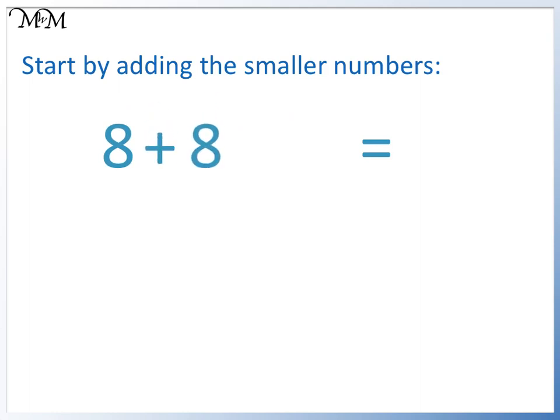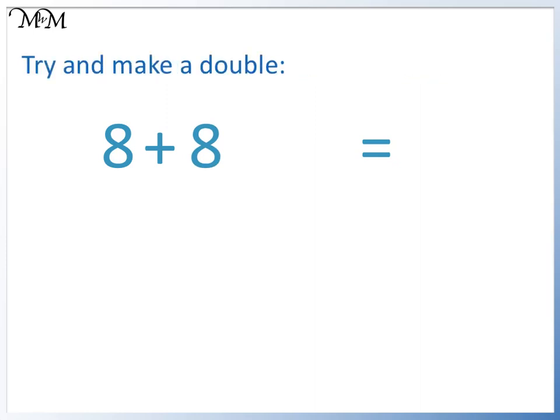We now have 8 plus 8. Two 8s. This is another strategy. We can try and make a double. 8 plus 8 is the same as 2 times 8.